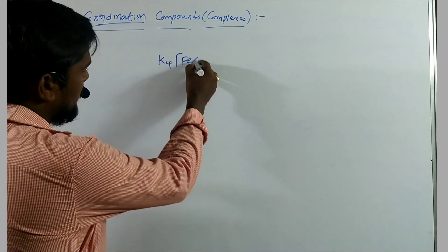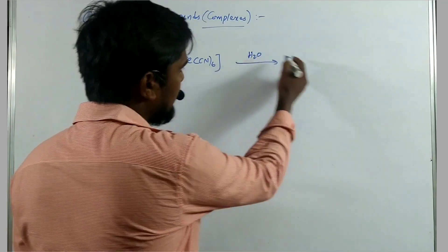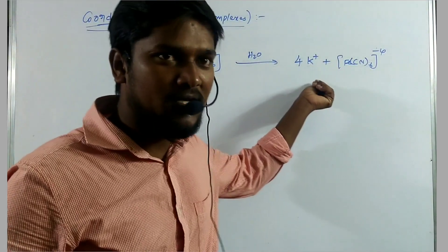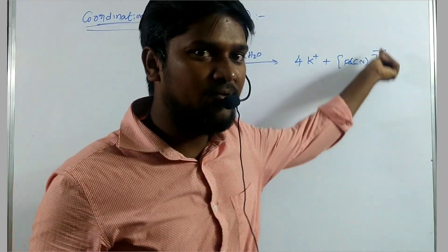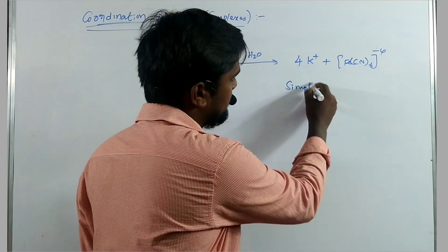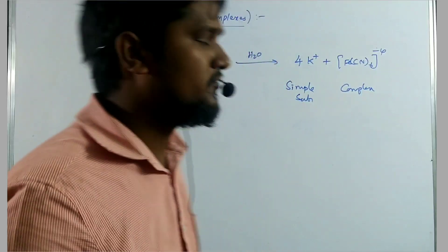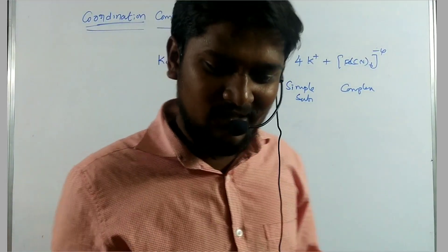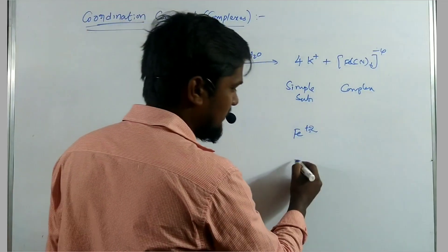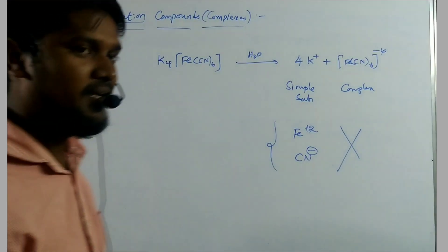K₄Fe(CN)₆ gives 4 moles of potassium cations and one complex ion [Fe(CN)₆]⁴⁻, with an overall net charge of minus 4 on the coordination sphere. In the case of double salts, it gives all ions' molar conductance. But in the case of complex compounds, it does not give Fe²⁺ molar conductance or CN⁻ molar conductance — these two molar conductances are not shown by the complex. That's why it is called a complex compound.